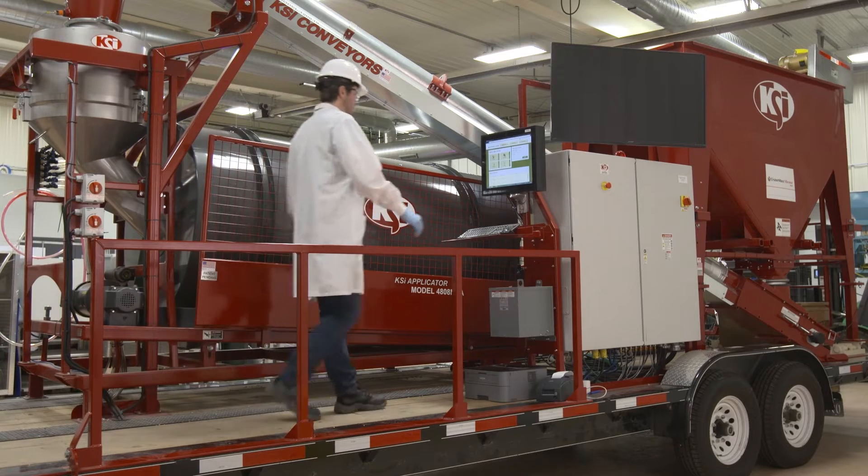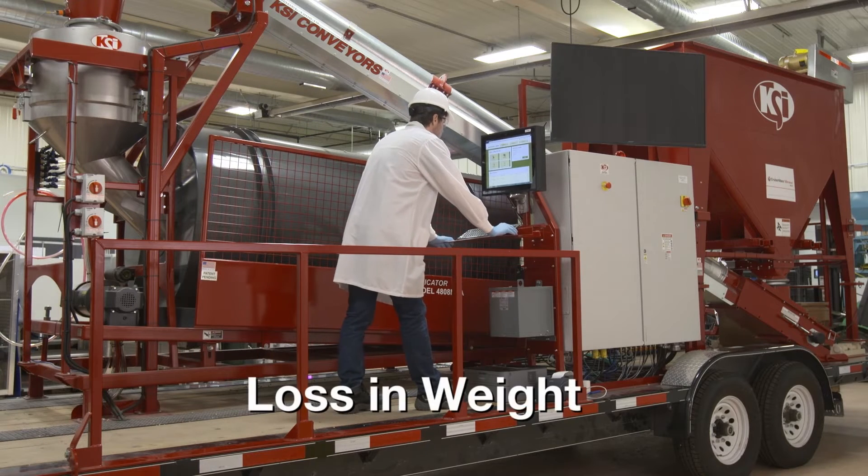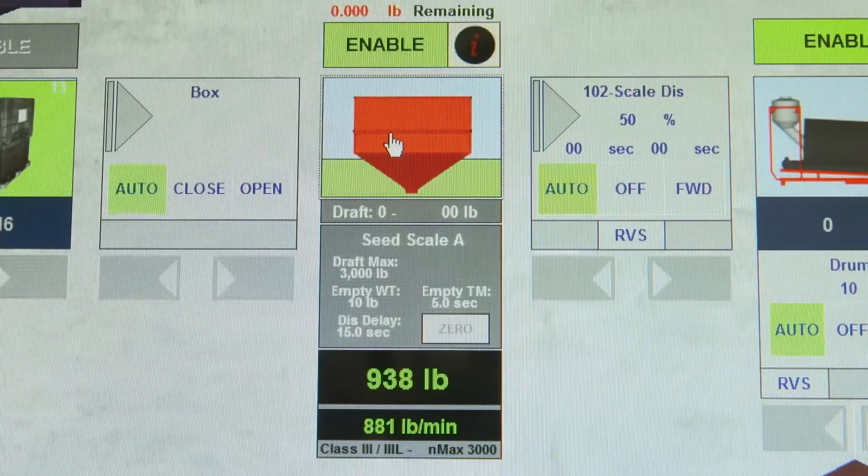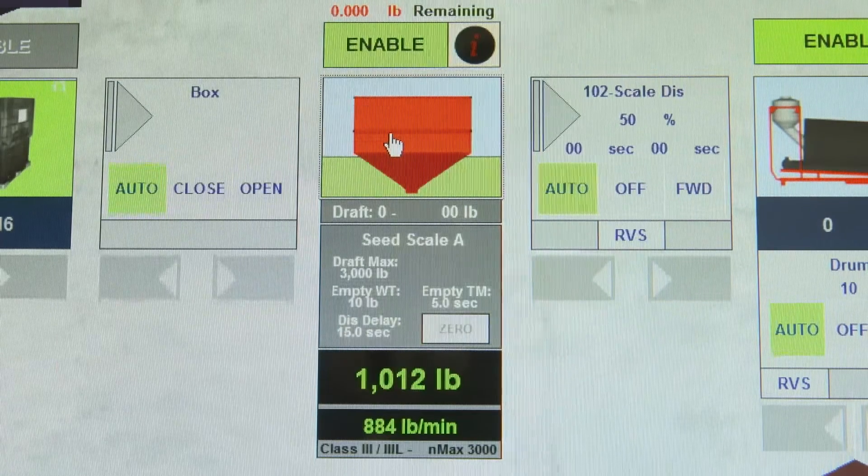The second way to measure seed flow utilizes the loss in weight scale which measures seed flow by using a scale to weigh the mass of seed entering the treater over a measured period of time.